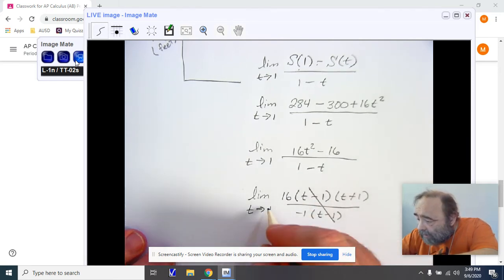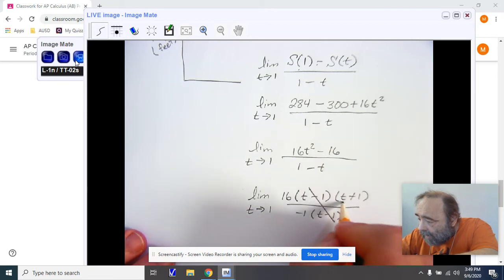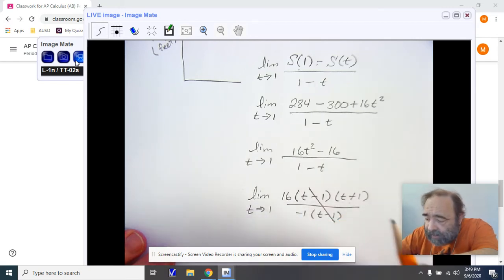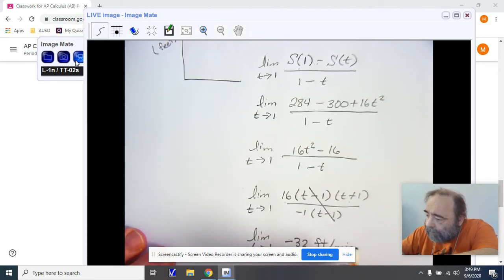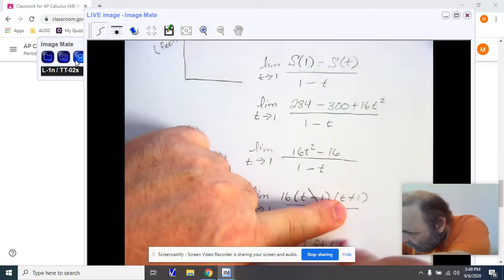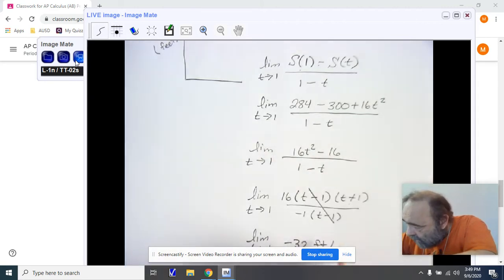Now, when I look at this, I plug my negative one in. I have two. Two times 16 is 32. And the limit as t approaches one is going to end up being negative 32. And this is feet per second. We are talking about an object in seconds.